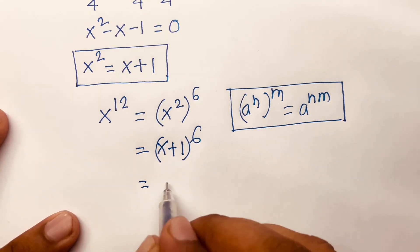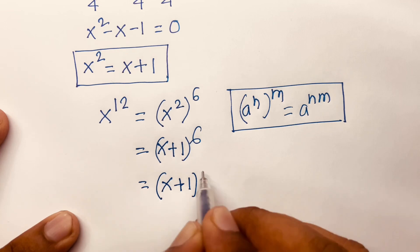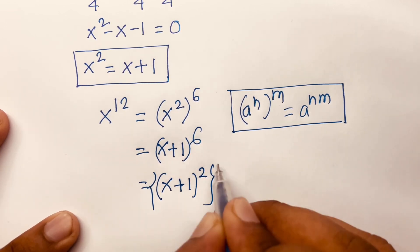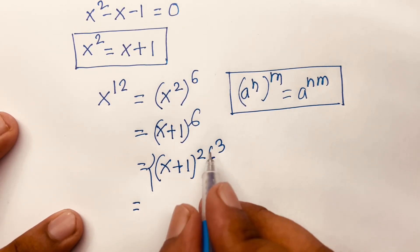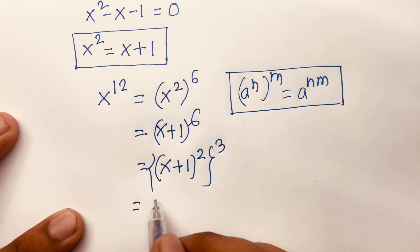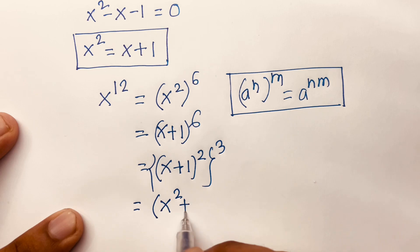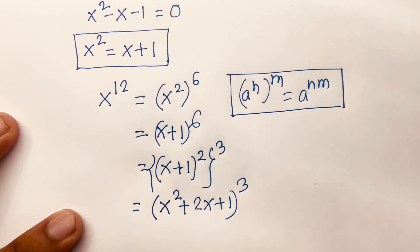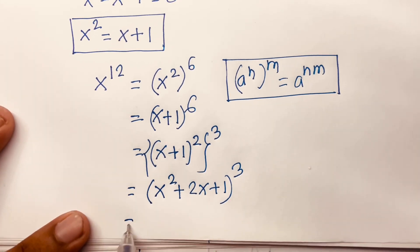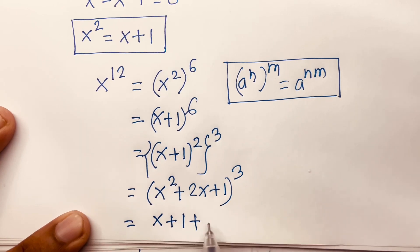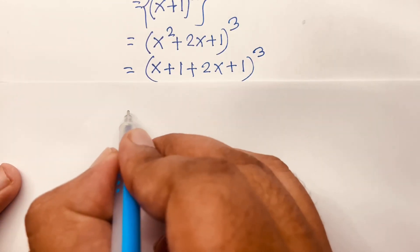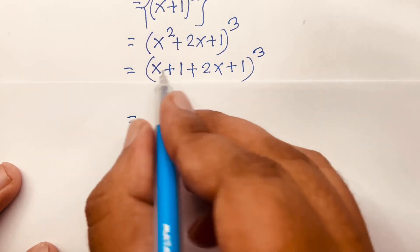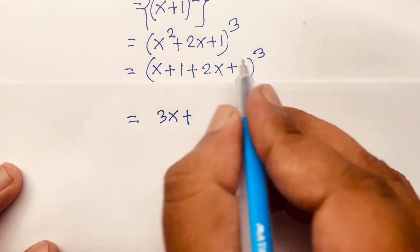Then I can write (x plus 1)^6 as ((x plus 1)^2)^3. Using (a plus b) whole square equals a squared plus 2ab plus b squared, this equation becomes (x squared plus 2x plus 1) to the power 3. Then substituting x squared equals x plus 1, we get (x plus 1 plus 2x plus 1) to the power 3.